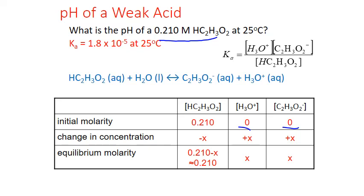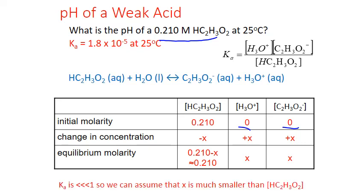To simplify the math and avoid the quadratic equation, we make the 'x is small' assumption. When Ka values are much less than 1 — generally on the order of 10⁻³ or smaller — we can assume that the amount of product formed is very small compared to the initial reactant amount. So x is small compared to 0.210, and instead of 0.210 − x in the denominator, we substitute just 0.210.